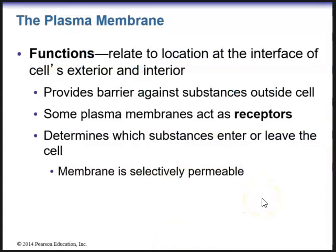The functions of the plasma membrane relate to its location at the interface of the cell's exterior and interior. The plasma membrane provides a barrier against substances outside the cell, acts as receptors for certain things such as hormones or neurotransmitters, and determines what substances can enter or leave the cell. We know that the membrane is selectively permeable — it can decide what comes into the cell or what leaves.